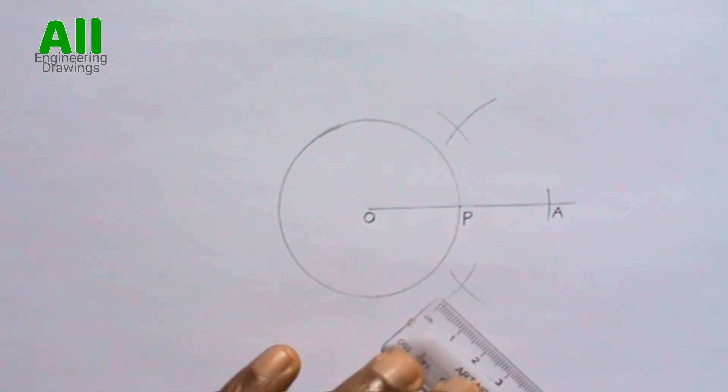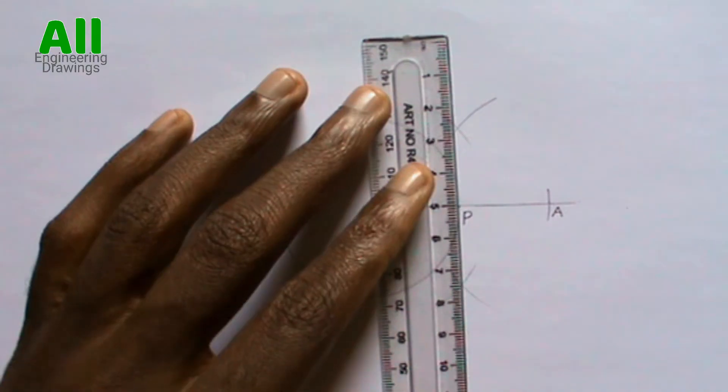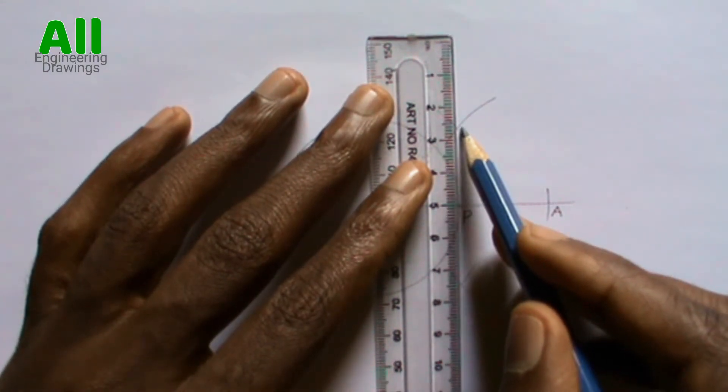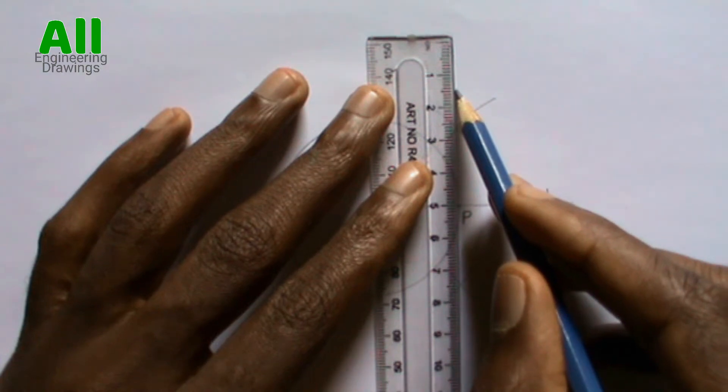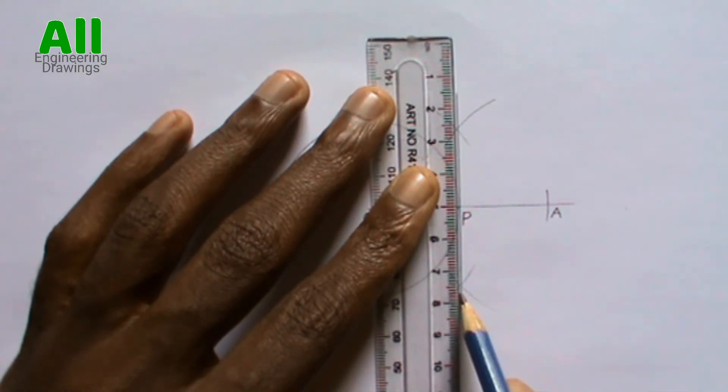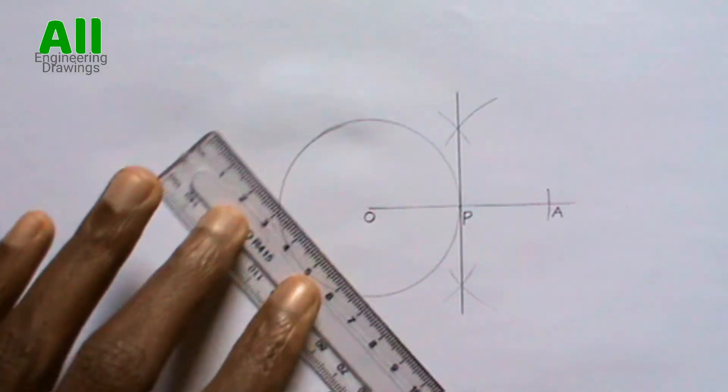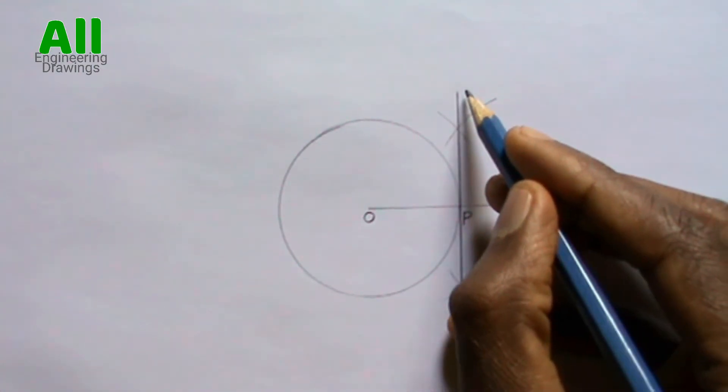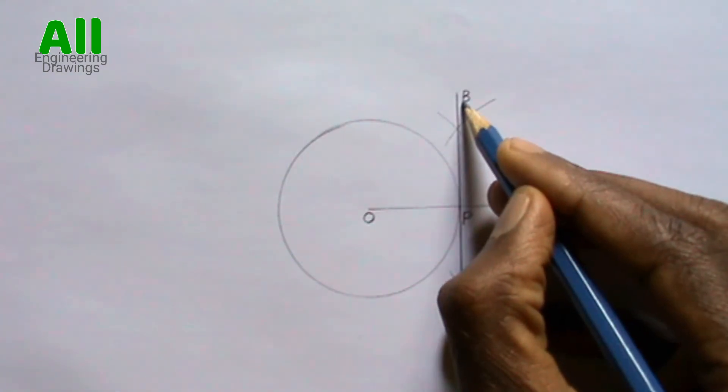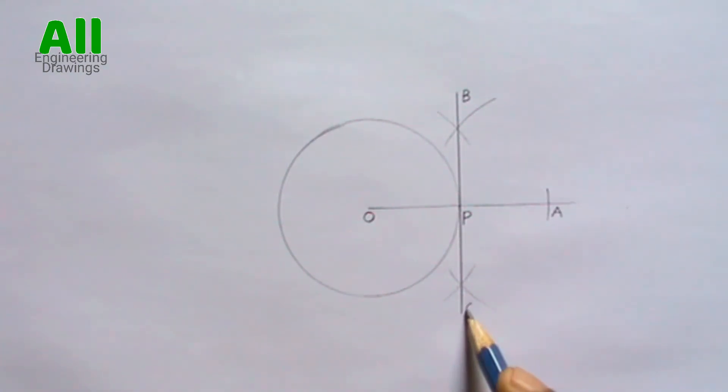Then label the bisector. The bisector BC is the required tangent.